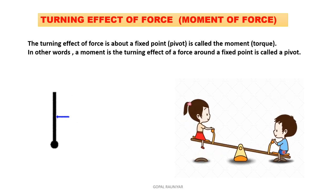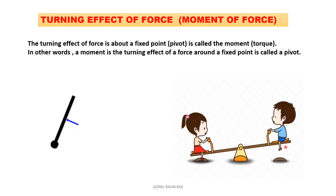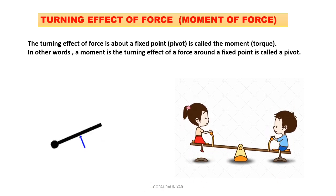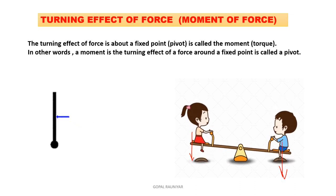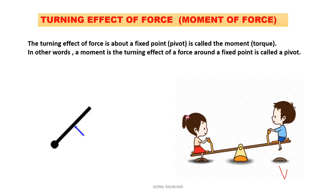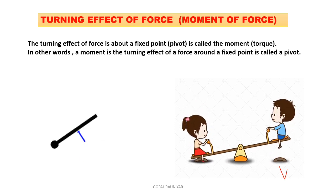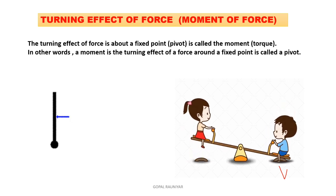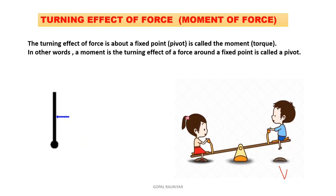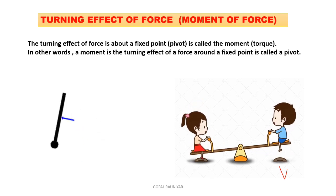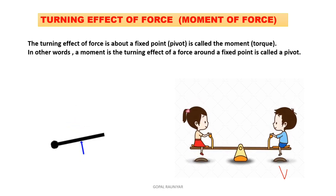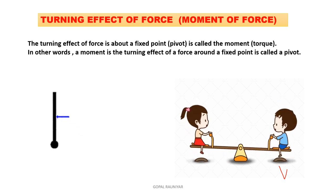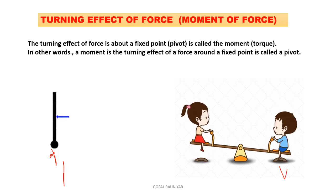On a seesaw, body weight acts like a force. Wherever the force is greater, the body tends to move in that direction. If the force on the boy's side is more, it turns to the boy's side; if more on the girl's side, it turns that way. The turning effect of force about a fixed point — also called a pivot — is called moment, or torque. In other words, moment is the turning effect of force around a fixed point called a pivot.